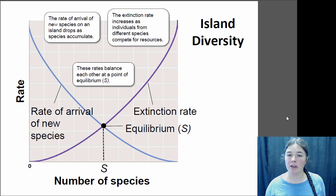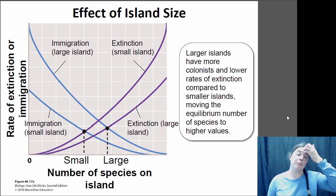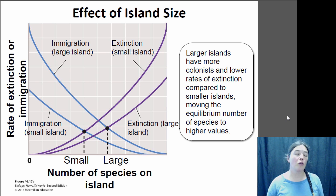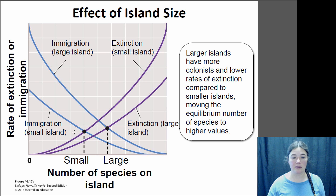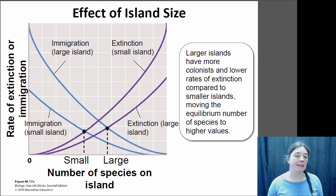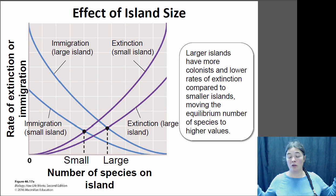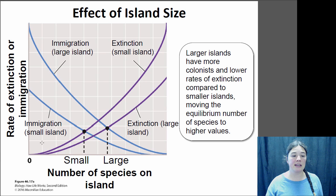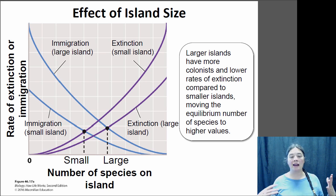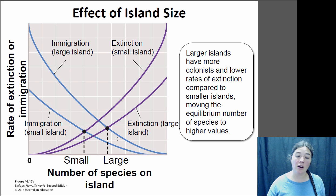There are a number of things that can influence that equilibrium point, and one of those is island size. Bigger islands can support a higher number of species and have lower extinction rates. Larger islands are also easier for dispersing animals to find — if you're flying over the ocean, it's much easier to run into a big island than a tiny one. So the immigration rates of large islands tend to be higher, meaning large islands support more species and small islands support fewer.